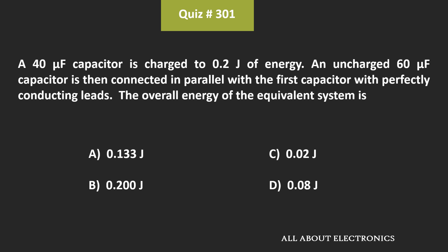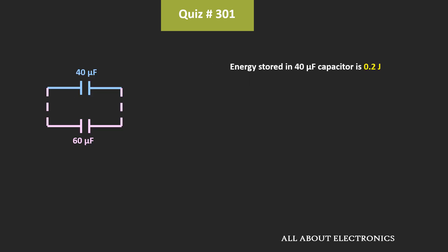So here, we have been asked to find the overall energy of the equivalent system. As per the question, the energy stored in the 40uF capacitor is equal to 0.2 Joule. Now with this capacitor, a 60uF uncharged capacitor is connected in parallel.